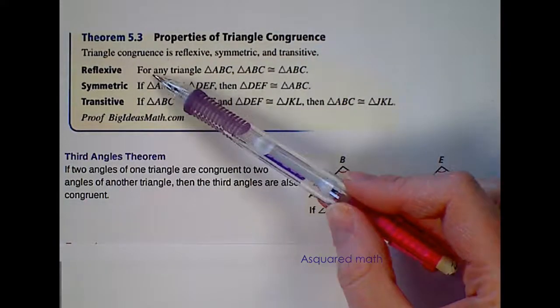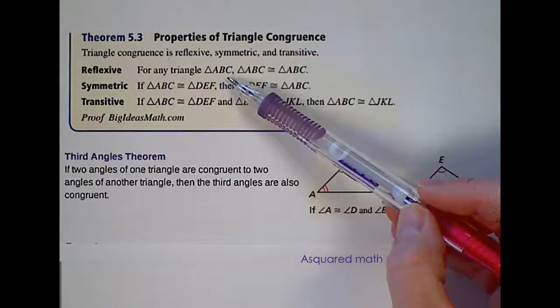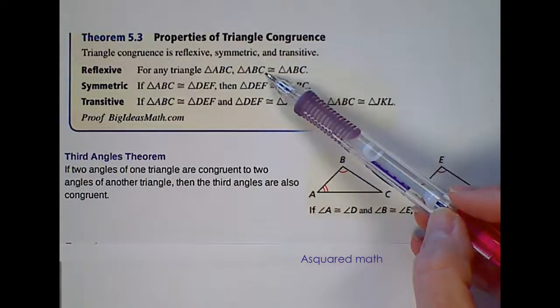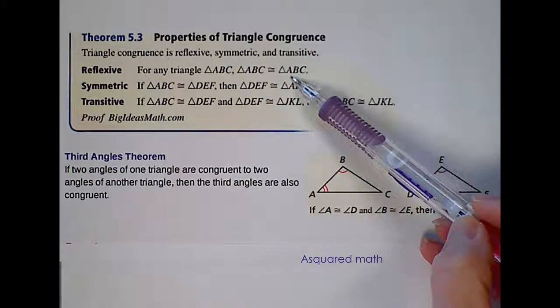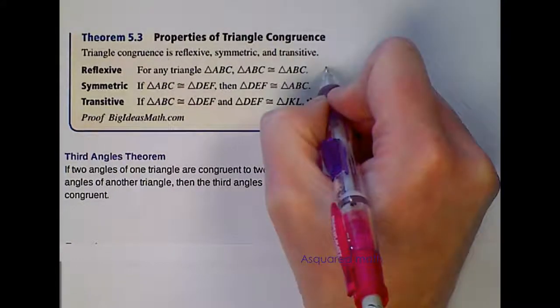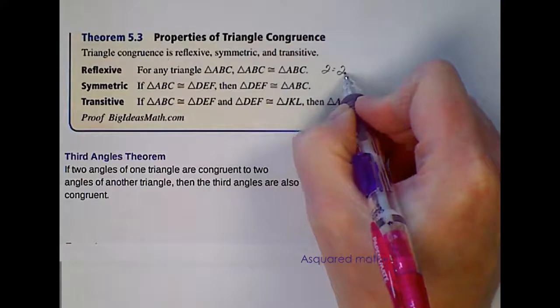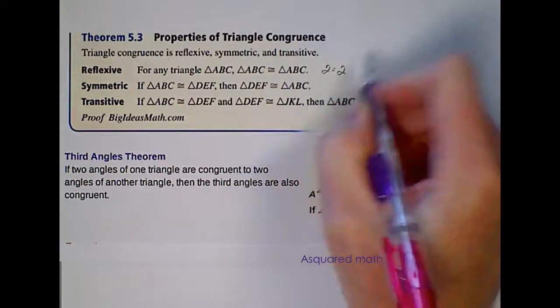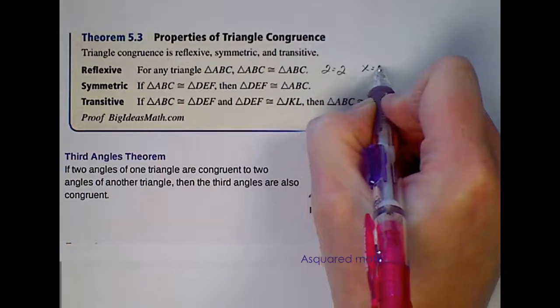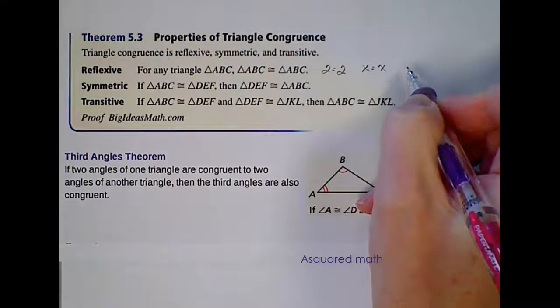Reflexive. For any triangle, triangle ABC, it says ABC is congruent to triangle ABC. In the algebra world, think of when you learned about 2 being equal to 2. That was a reflexive statement, or X equals X.